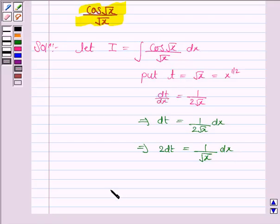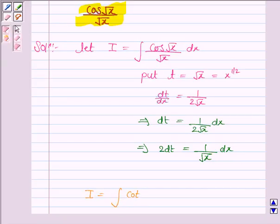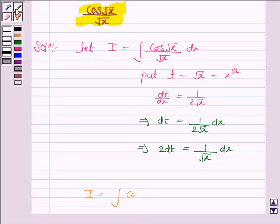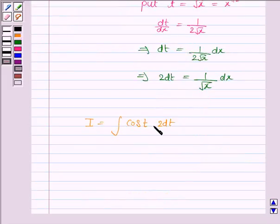So substituting all these values in the integral, the integral becomes cos(t) into 2dt. So the integral becomes 2∫cos(t) dt.